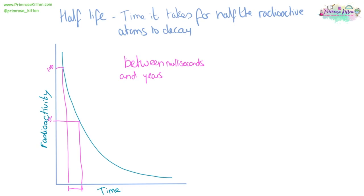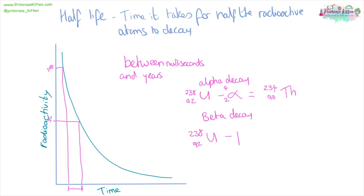Here we have uranium-238 undergoing alpha decay. Alpha is 4, 2. So 238 minus 4 gives us 234, and 92 minus 2 gives us 90. Then we use the periodic table to look up what has an atomic number of 90, giving us thorium. For beta decay we have beta: 0, −1. So 238 minus 0 gives us 238, and 92 minus (−1) gives us 93, which gives us neptunium. The atomic number is the important thing in these calculations.